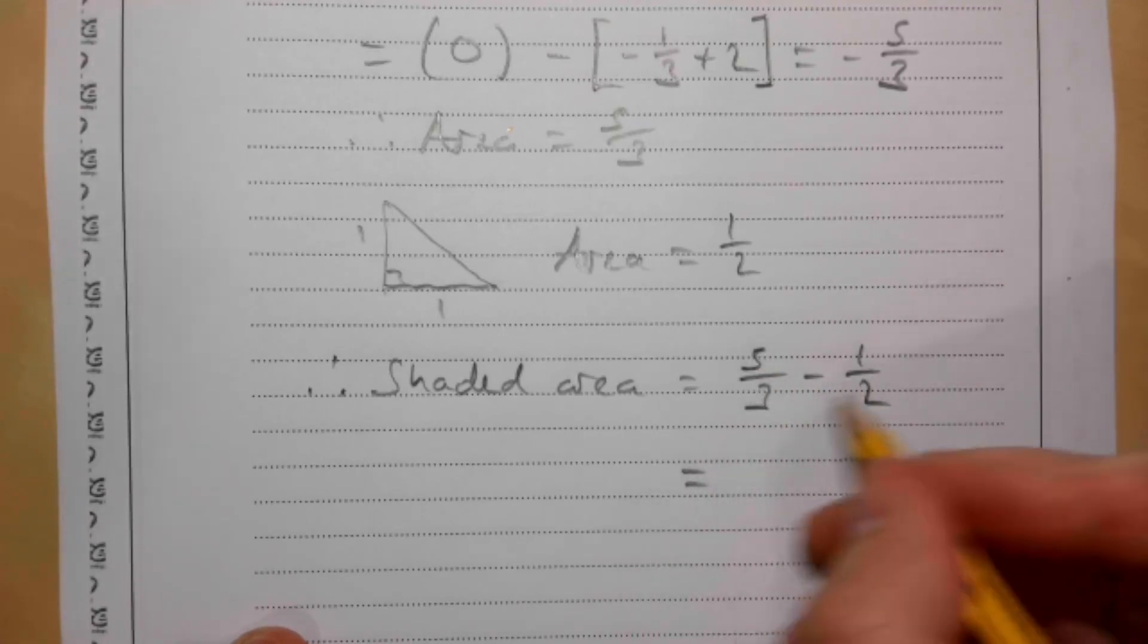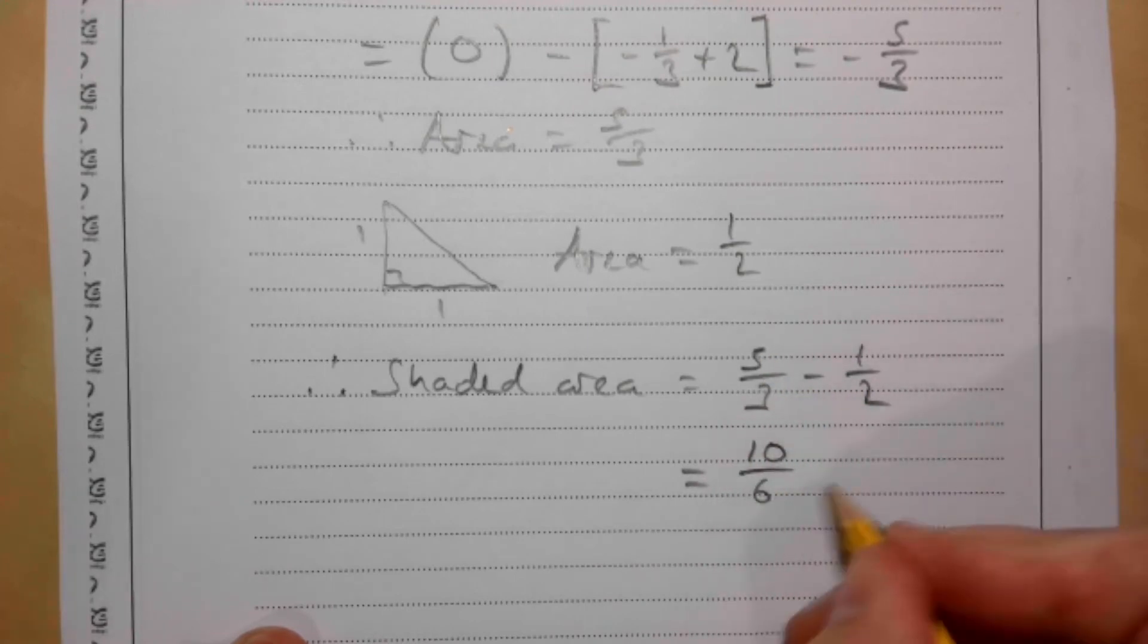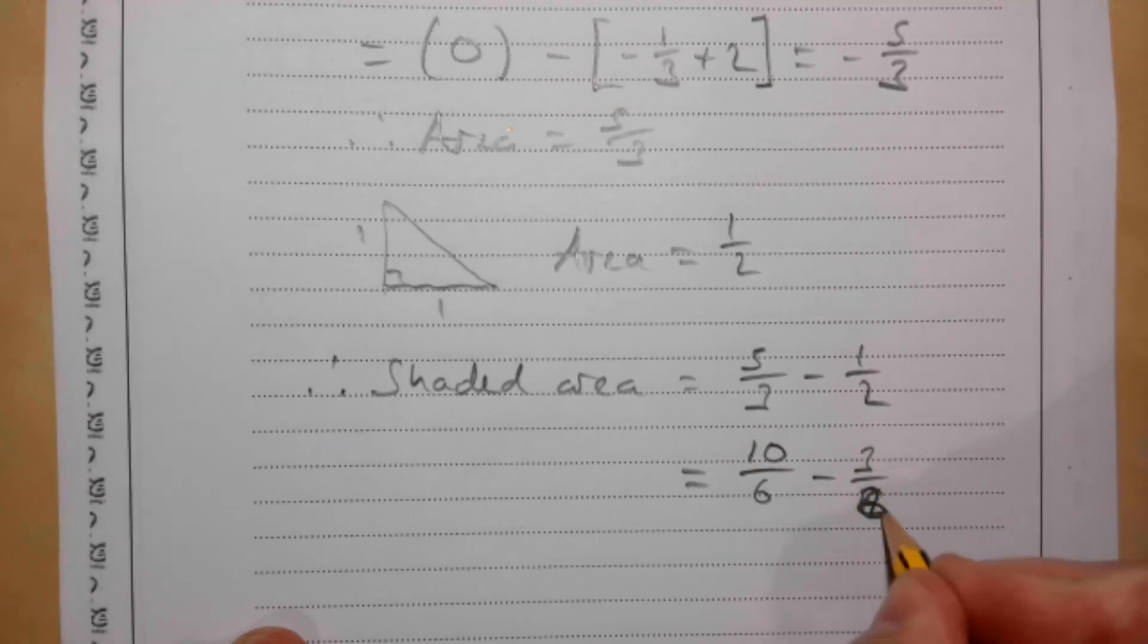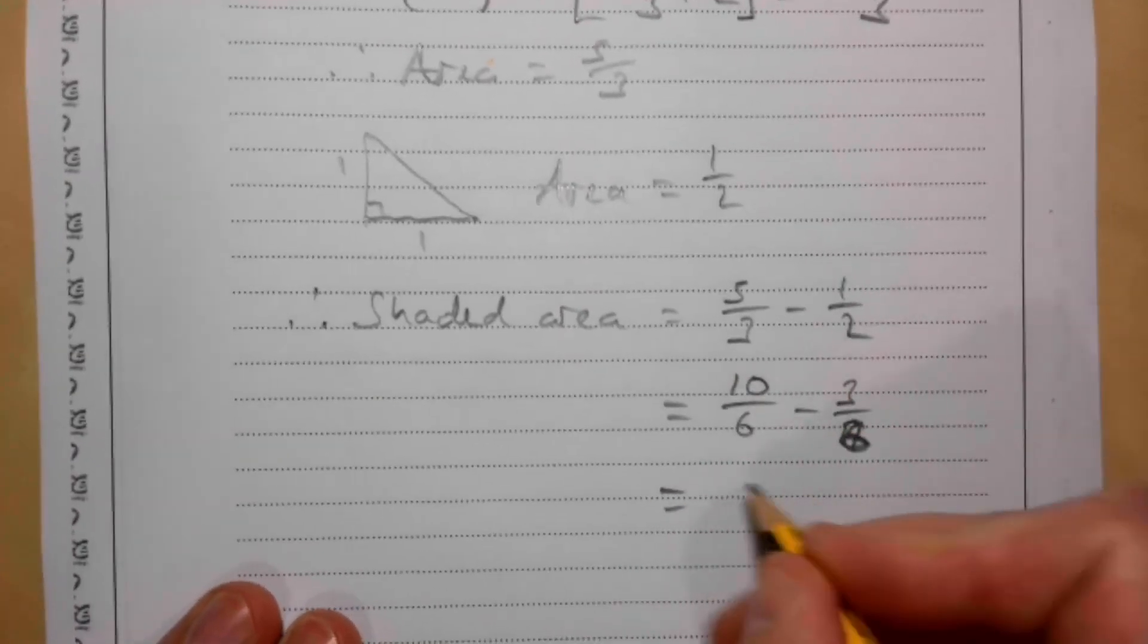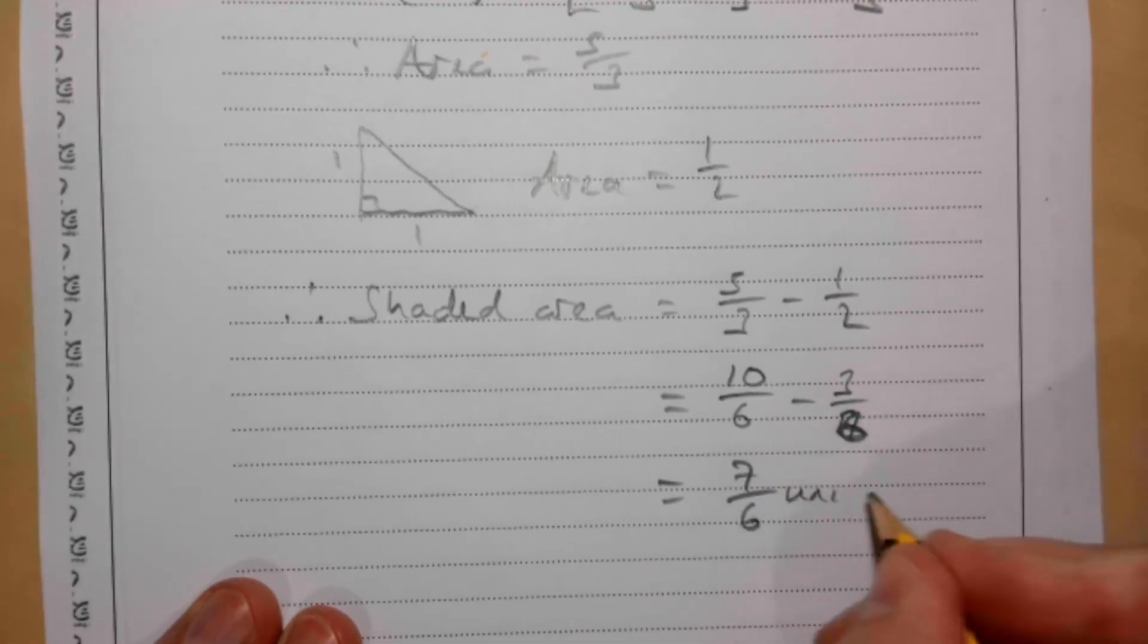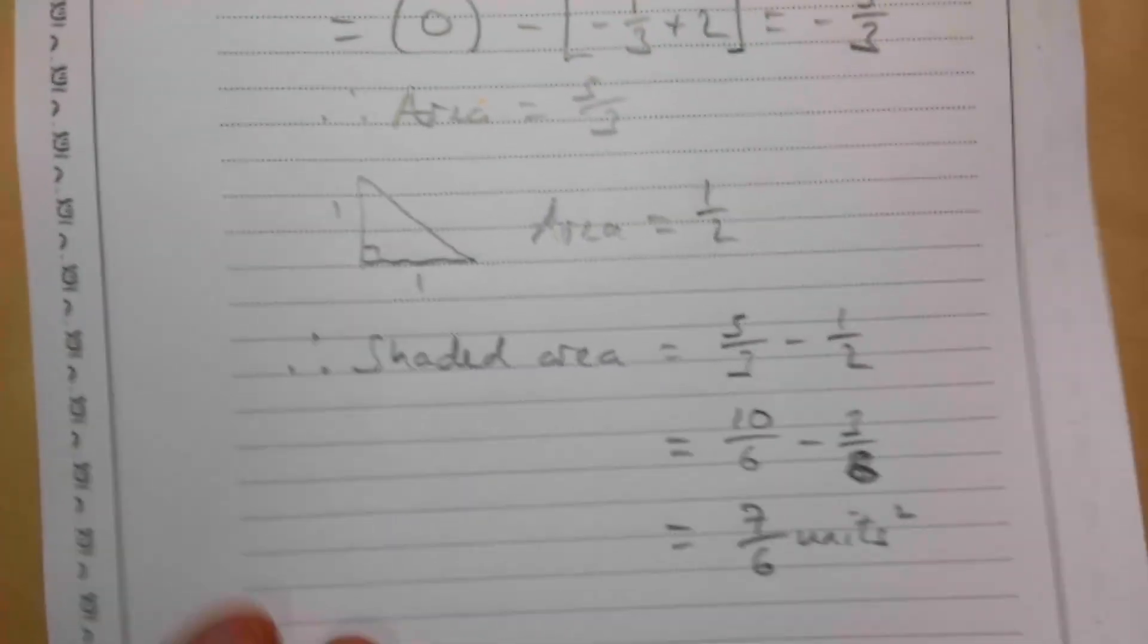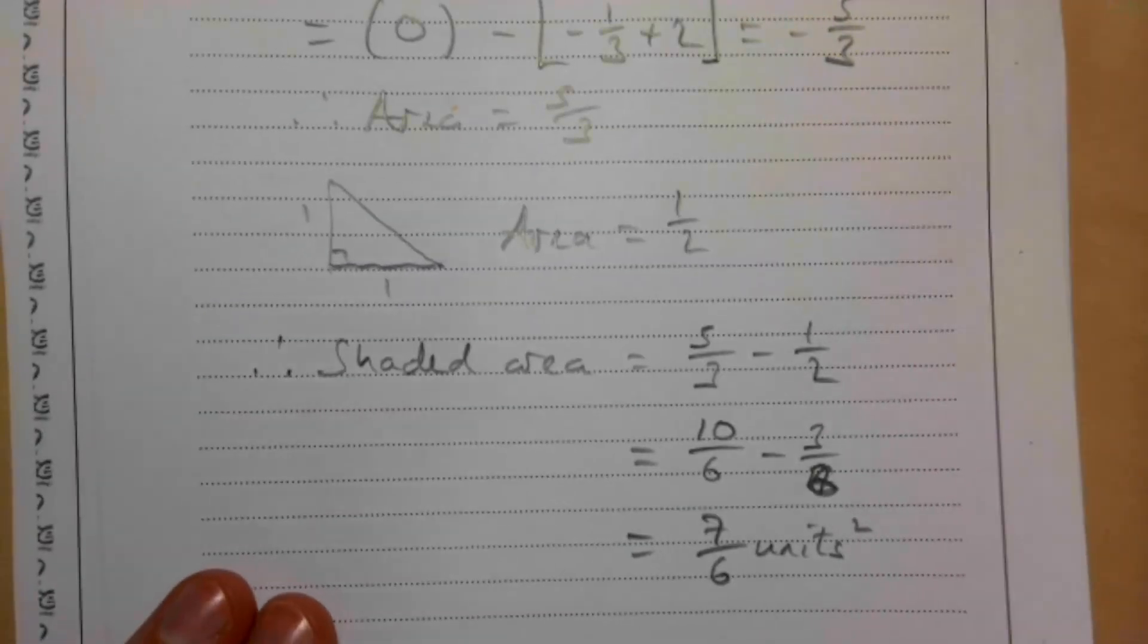And that gives me then, well we're going to put it into 6ths as opposed to times by 2. 10 over 6 minus 3 over 6, sorry, I should say 6 obviously. 10 take away 3 is 7 over 6 units squared. And that's us then for question 5.